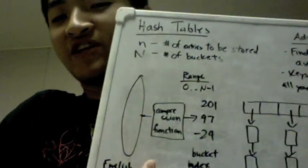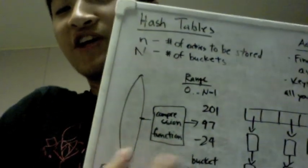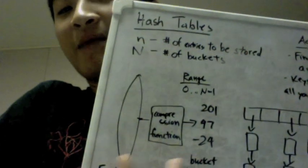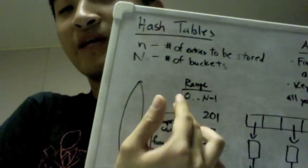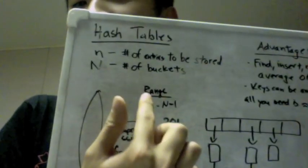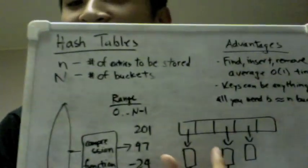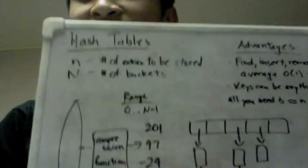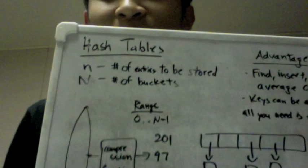Here's the compression function. The compression function is a function that takes in an object and maps it to a number in the range of 0 to big N minus 1, where big N is the number of buckets, such that you can store that object into your hash table.